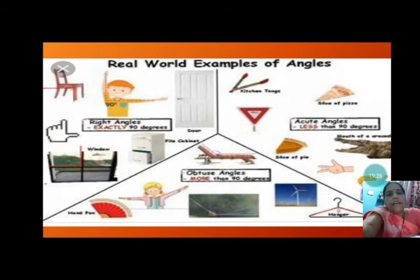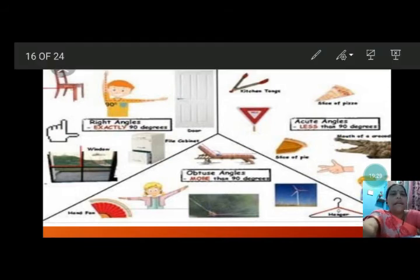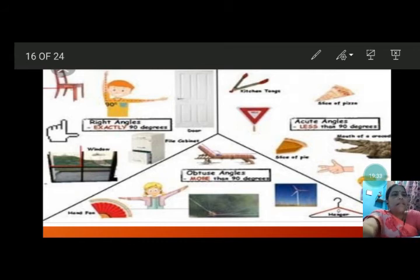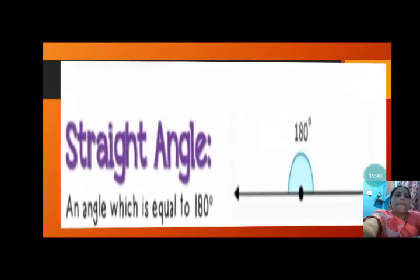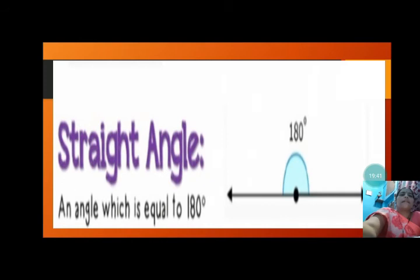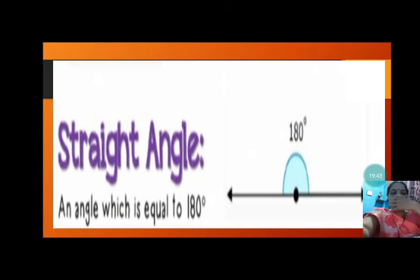So we have seen real world examples of 90 degrees — right angle, then acute angle, and then obtuse angle. Now let us go to another angle — the straight angle.